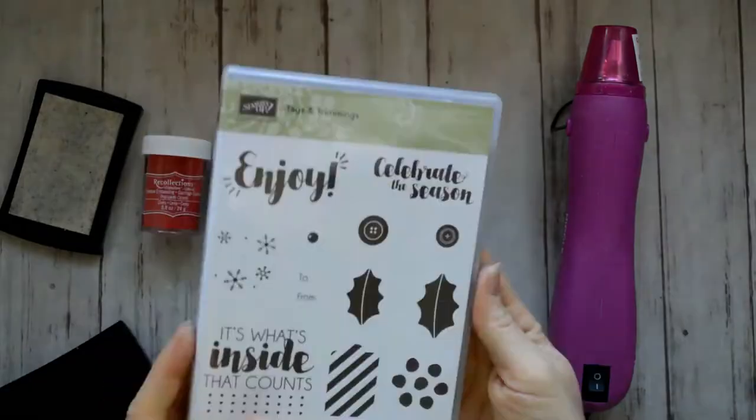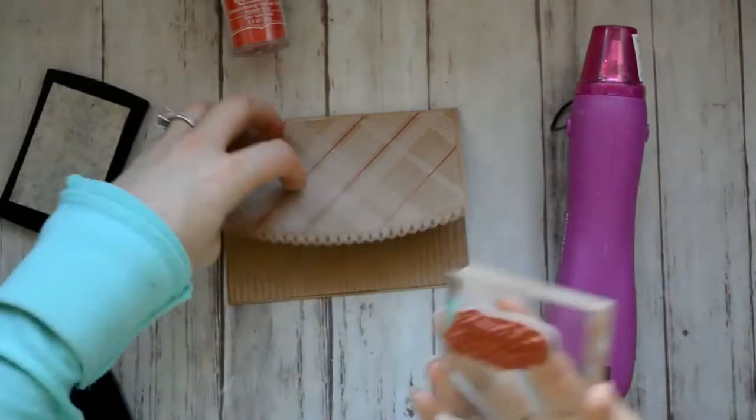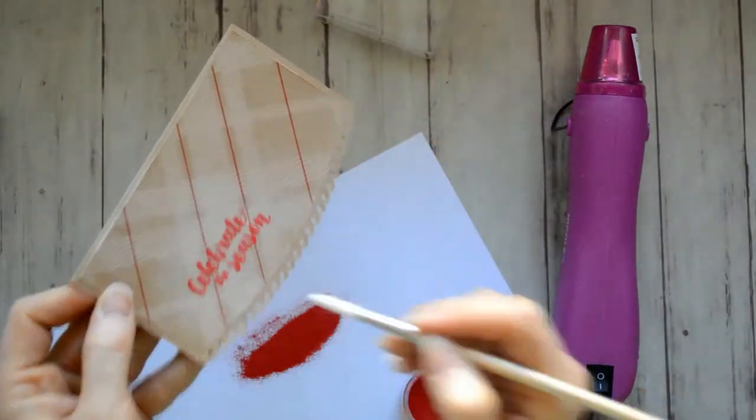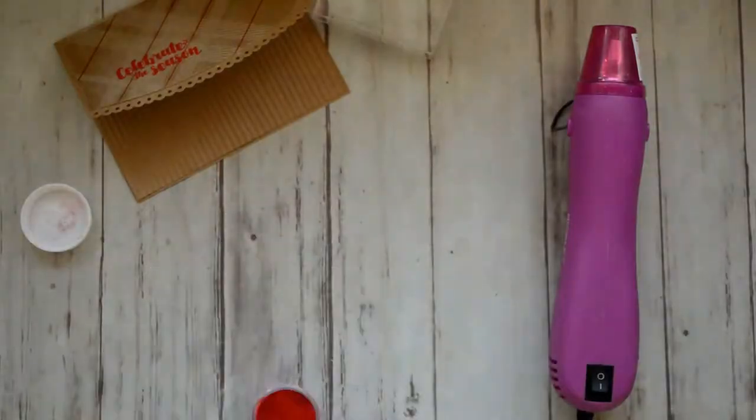So instead I went with the Tags and Trimmings stamp set from Stampin' Up. It says celebrate the season. And I'm going to emboss that in red. This is from Recollections. I got that at Michaels.